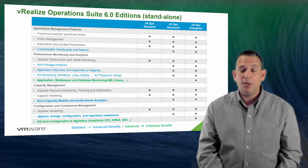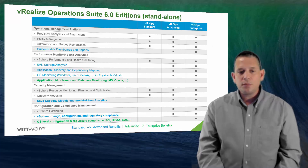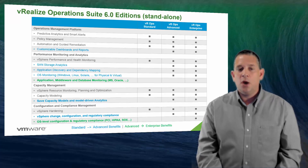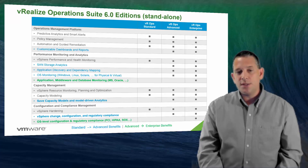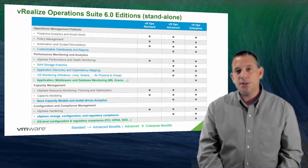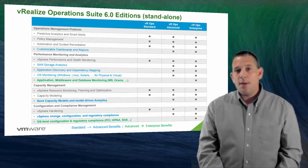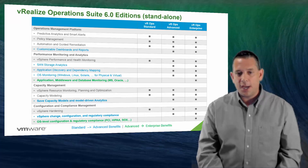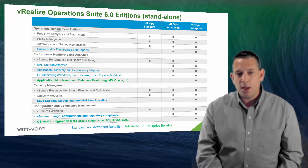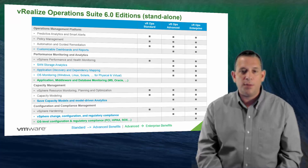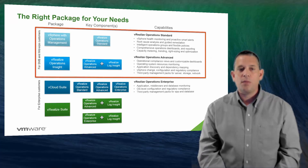Going from Advanced to Enterprise edition provides the ability to monitor at a much deeper level, all the way down to application, middleware, and database level. You can also get OS-level configuration and regulatory compliance related to items such as PCI, HIPAA, and SOX compliance standards. A lot of businesses such as financial and healthcare institutions have to follow these compliance guidelines, so vROps Enterprise edition will help ensure their virtualized environment stays compliant by monitoring it and alerting when something falls out of compliance.